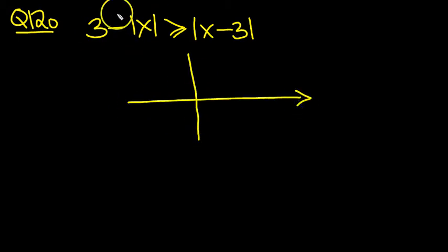So firstly the 3 minus modulus of x, take that as a function. This has the value x when x is greater than or equal to 0. So you end up with 3 minus x. The 3 minus x line will look like this. And this is the value you've got, 3 minus x when x is greater than or equal to 0.